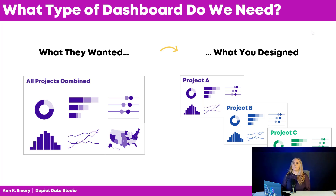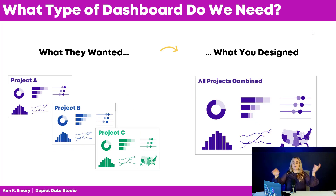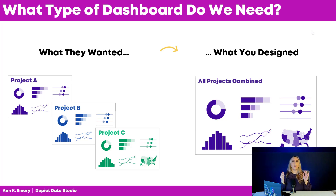Another mismatch I often see is that the audience might really need an overview, but we give them disaggregated data that's really detailed — drilling down on all the specific projects. Or more commonly, I see the reverse: they actually want disaggregated data — project A, project B, and project C all separate, all individualized and very actionable — but we give them the aggregated overview. These are the types of mismatches I see and would love to avoid.